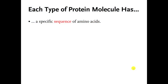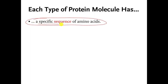Welcome back, everybody. This is an extension of the previous video. In the previous video, we ended by talking about how different protein molecules have a specific sequence — their own special order of connecting the amino acids to each other — and the order that you connect them in, or the sequence they're connected in, controls what type of job the protein molecule does.